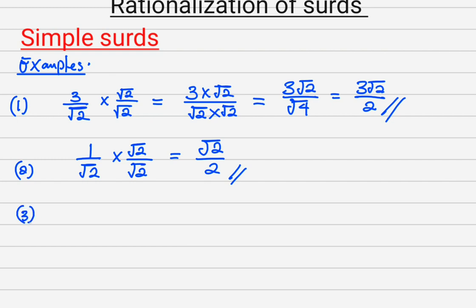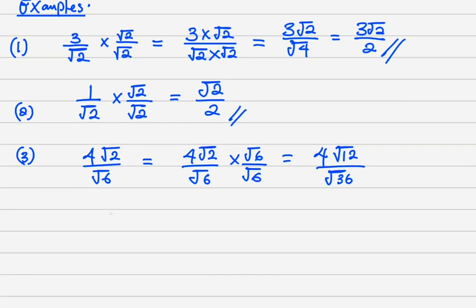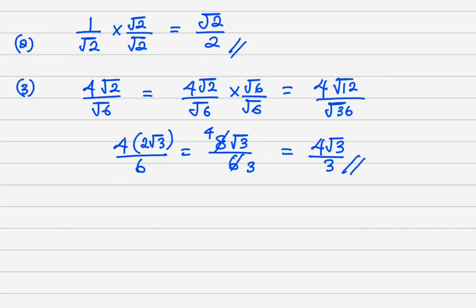The next one: I can have 4 root 2 all over root 6. I'll multiply this by root 6 all over root 6. My answer will be 4 times root 2 times root 6, which is root 12, all over 6. Now root 12 can be written as 2 root 3, all over 6. This gives 8 root 3 all over 6, which simplifies to 4 root 3 all over 3.